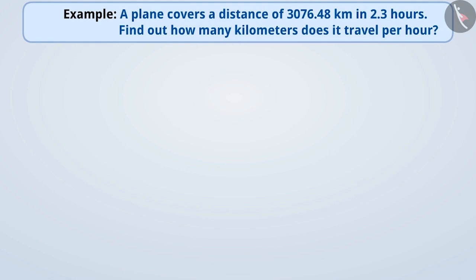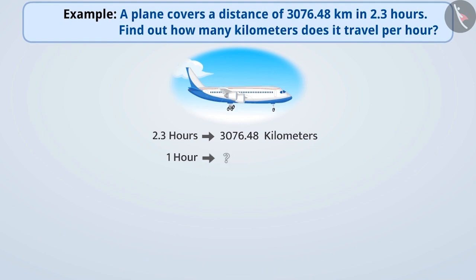The example shows that the aircraft covers a distance of 3076.48 kilometres in 2.3 hours duration. If we have to find out how many kilometres it travels per hour, then for this, we have to divide 3076.48 by 2.3. So let's find the result.